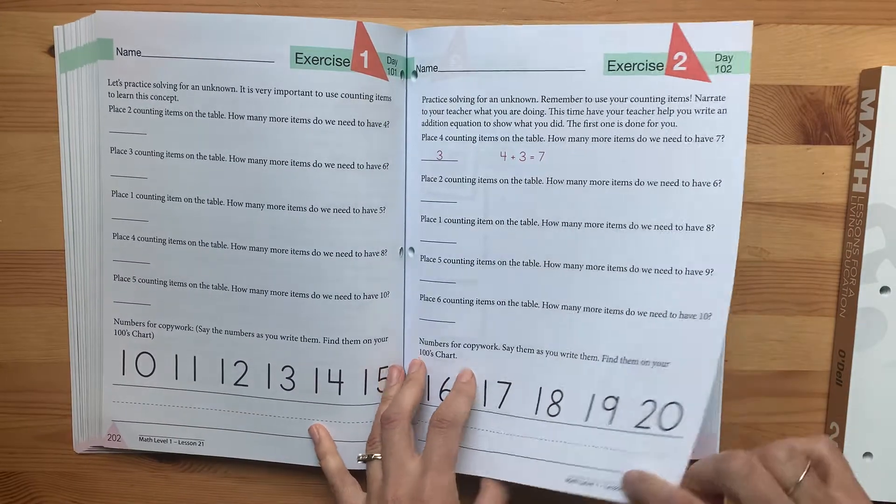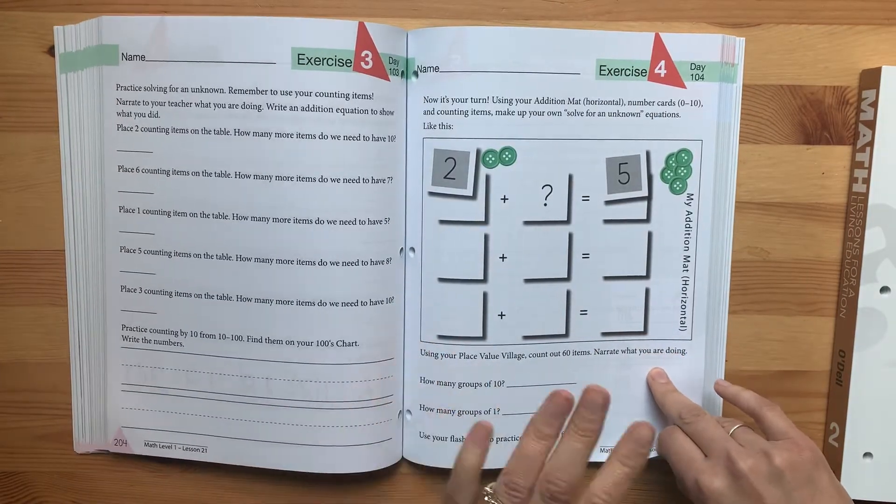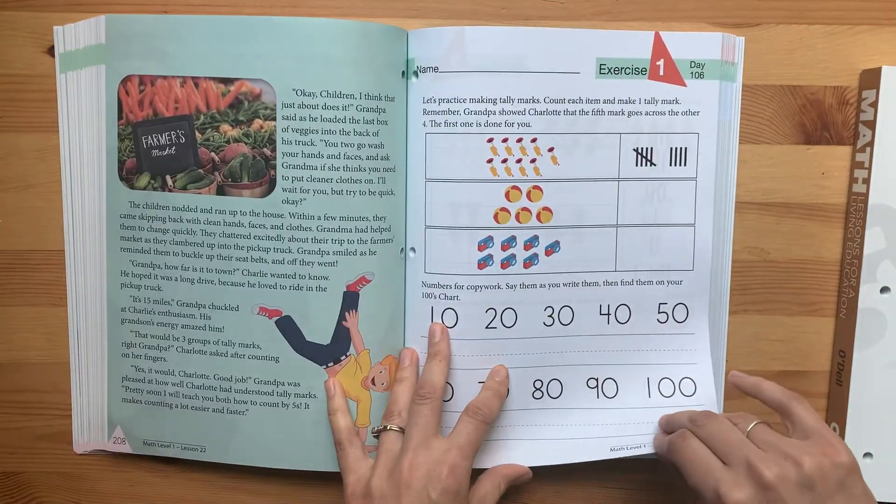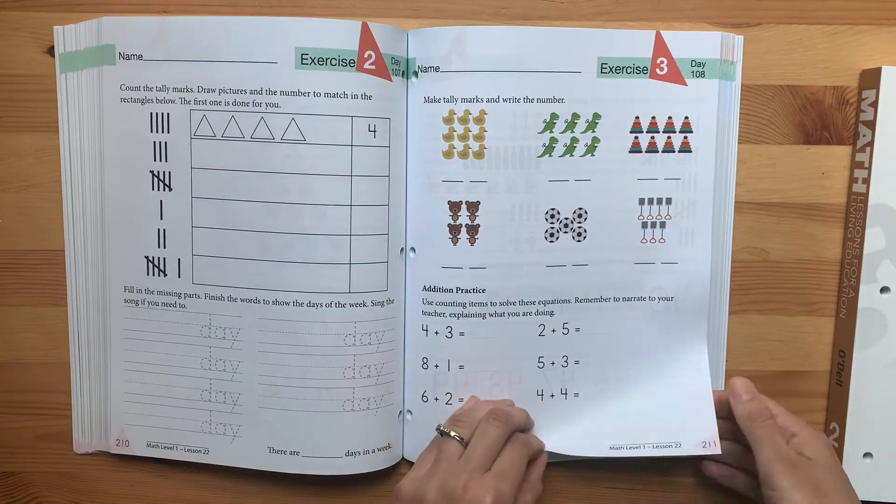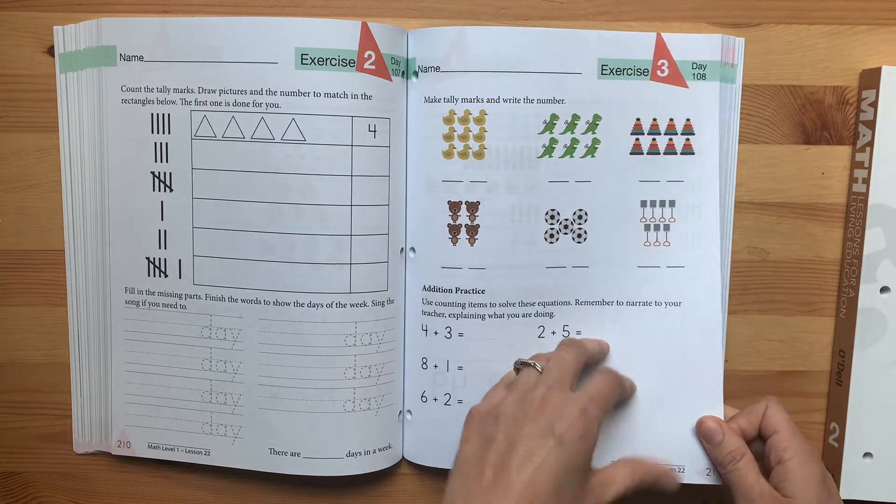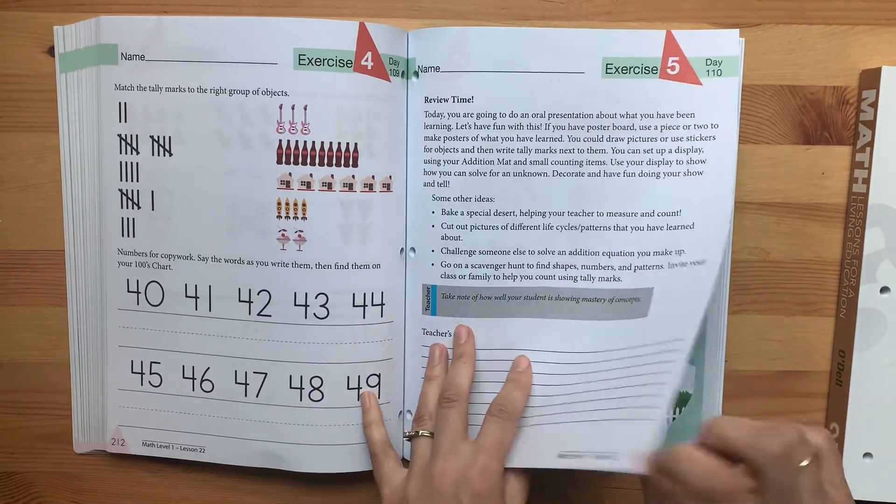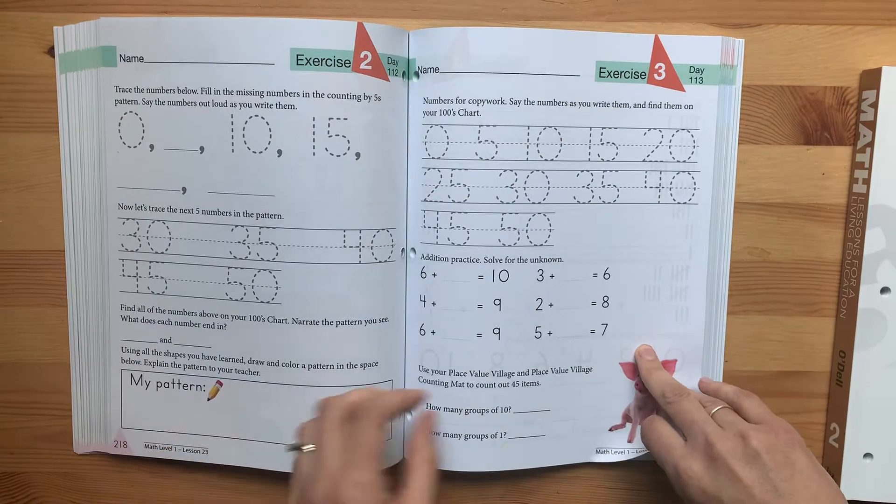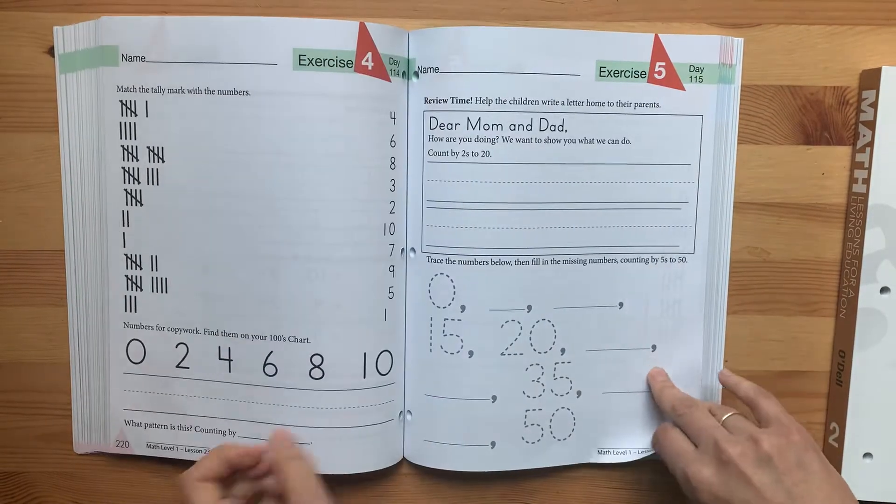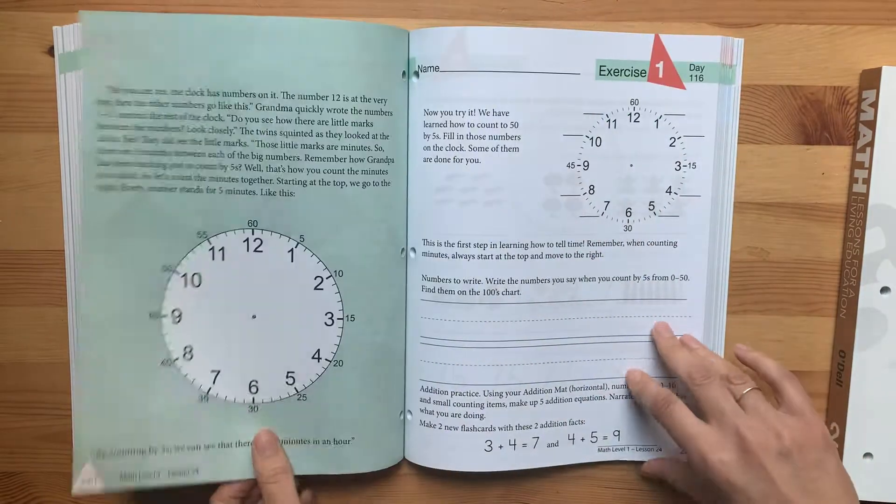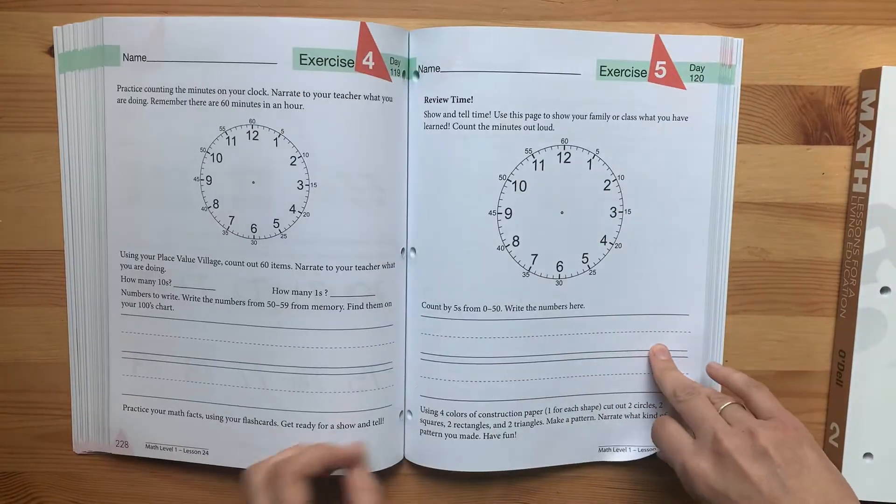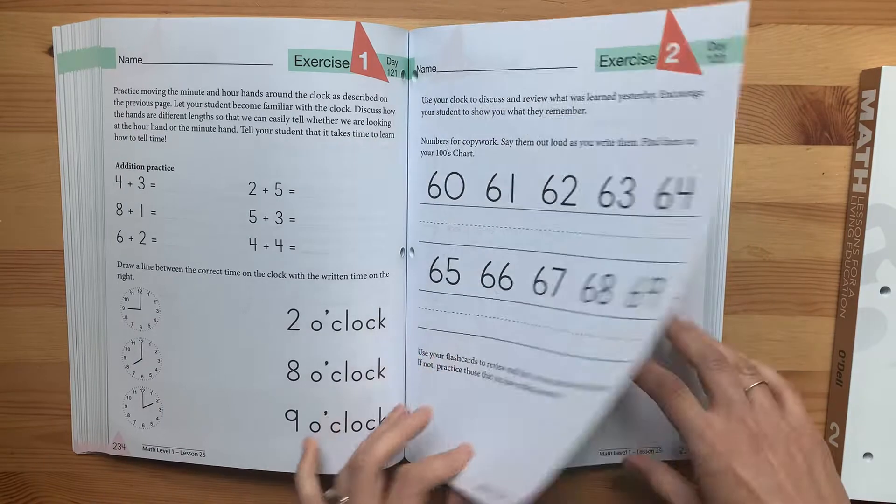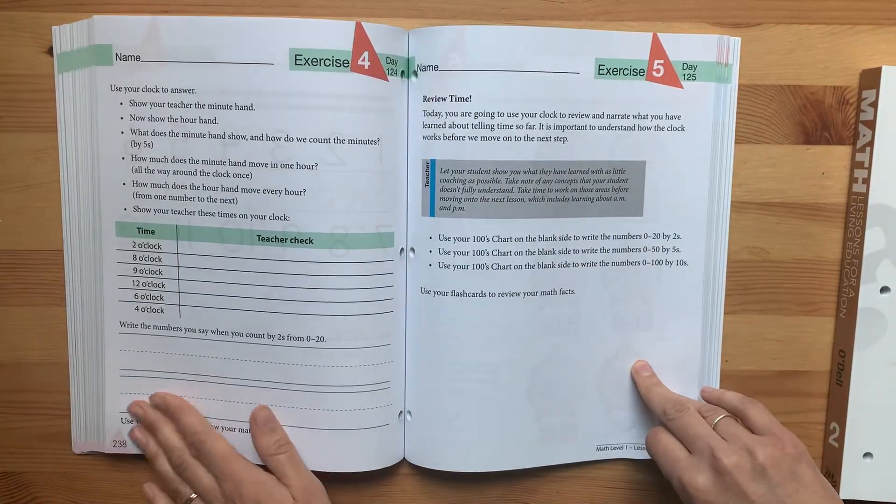The one drawback for me personally with these workbooks, as much as I love them and just their very short lessons which I appreciate, I do notice that there is a lot less color in here than there is in the Good and the Beautiful that we used. Every story page has color, but the worksheets are very black and white. I definitely just noticed that right off the bat from our old curriculum that we did last year. There were lots of vibrant colors.